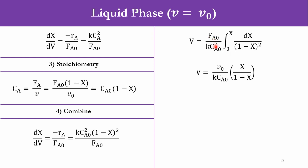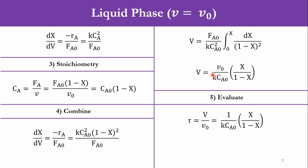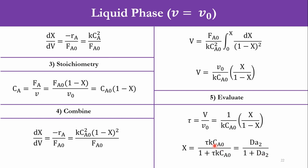Since FA0 = V₀·CA0, the CA0 terms cancel and we get V₀/(k·CA0) · X/(1−X). Dividing both sides by V₀ gives space-time τ = V/V₀ = (1/k·CA0) · X/(1−X). Rearranging: X = τ·k·CA0 / (1 + τ·k·CA0). The term τ·k·CA0 is the Damköhler number for the second-order system, Da₂, so X = Da₂/(1 + Da₂). For first-order, it was τ·k; for second-order, it is τ·k·CA0. That completes the liquid-phase derivation.